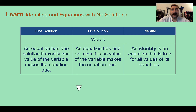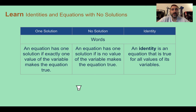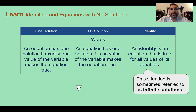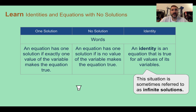Let's learn: identities and equations with no solutions. When solving with a variable on both sides, there are three possible outcomes. We can get one solution, as we just saw. We can get no solution, where no value for the variable makes the equation true. And we can get what's called an identity, which means it's true for every value — also sometimes referred to as infinite solutions because any number you plug in works. I will generally refer to infinite solutions rather than identity.